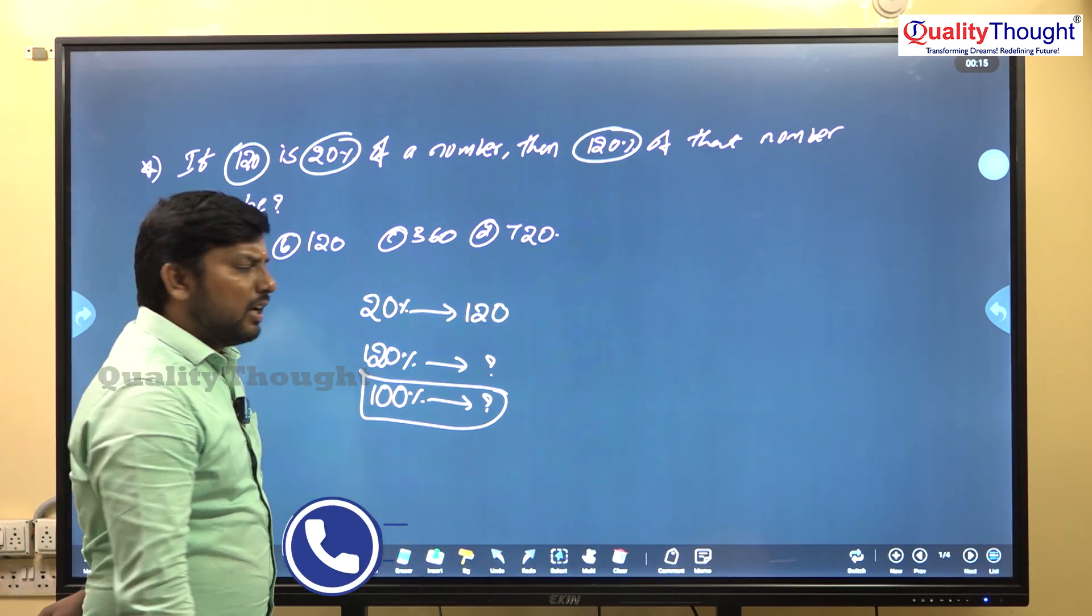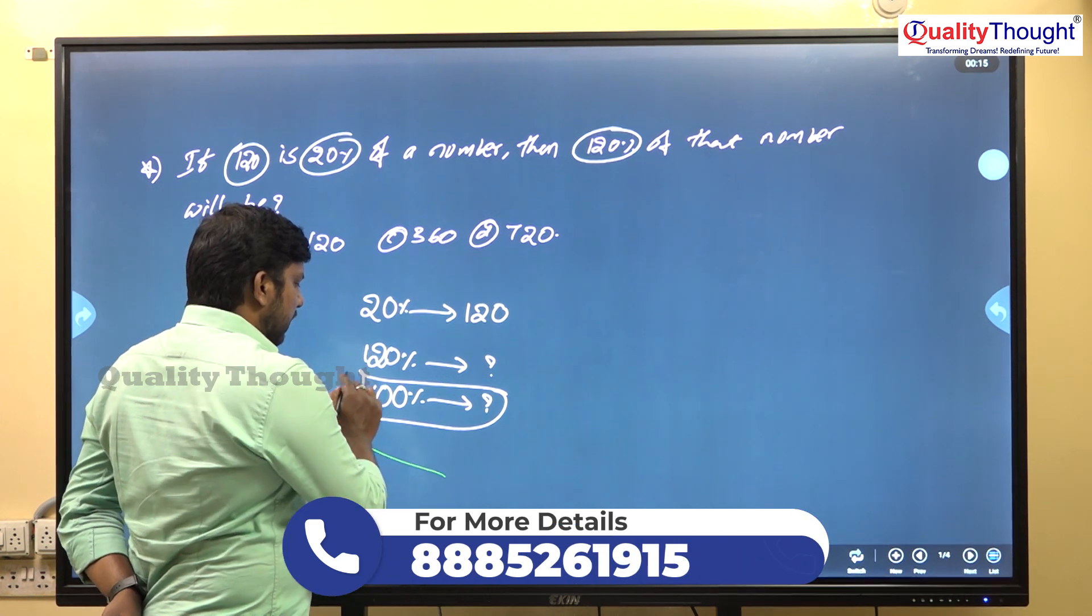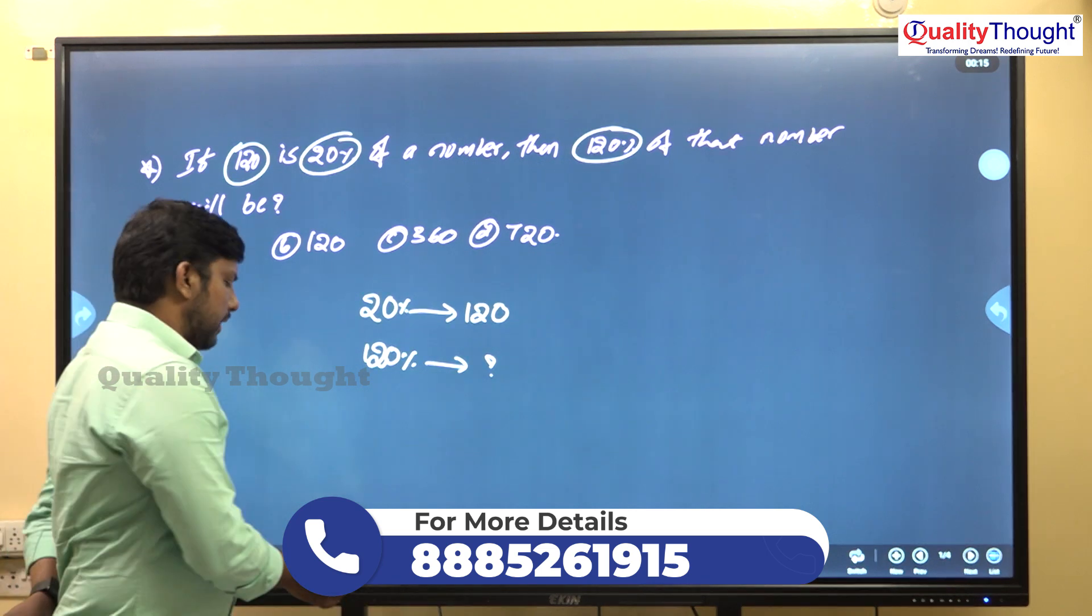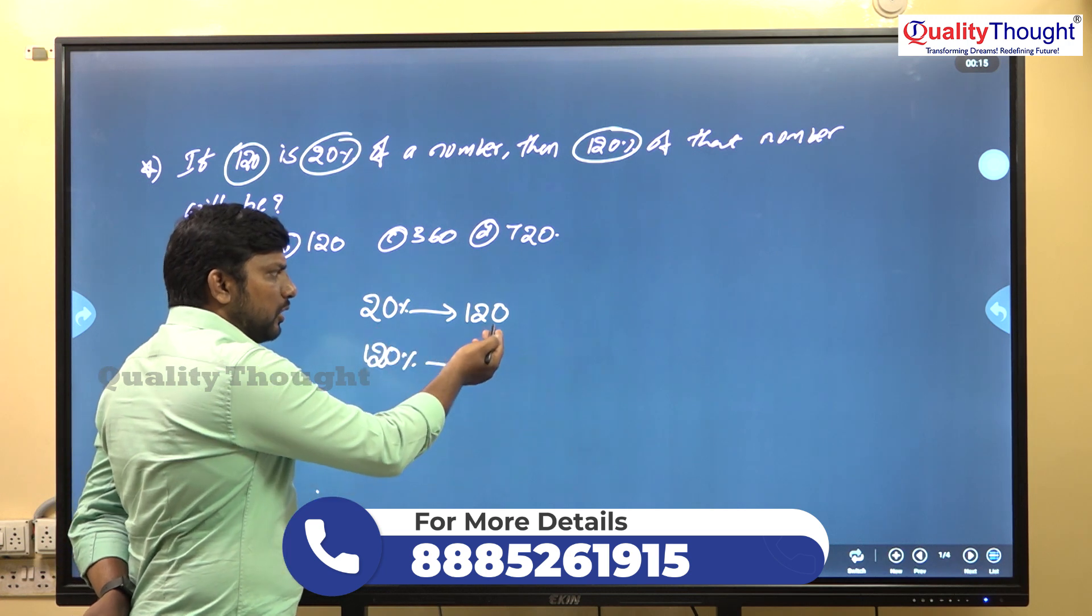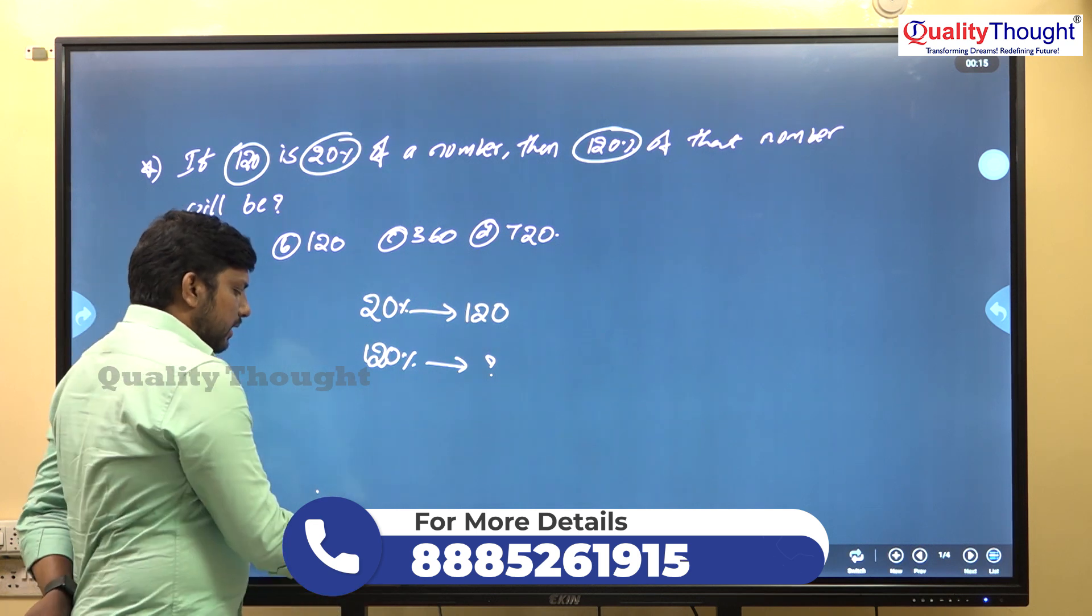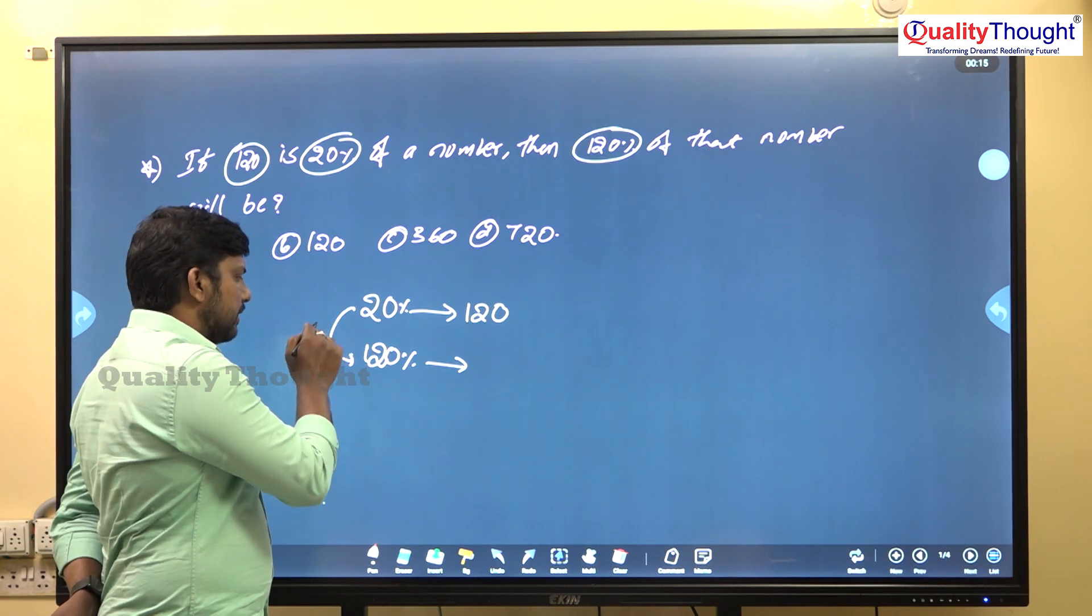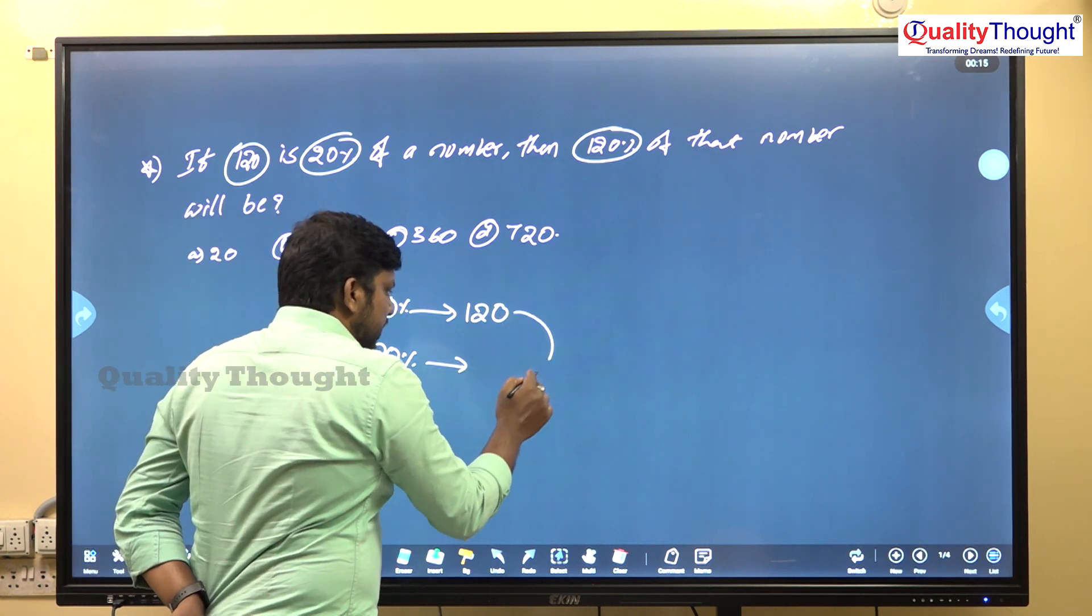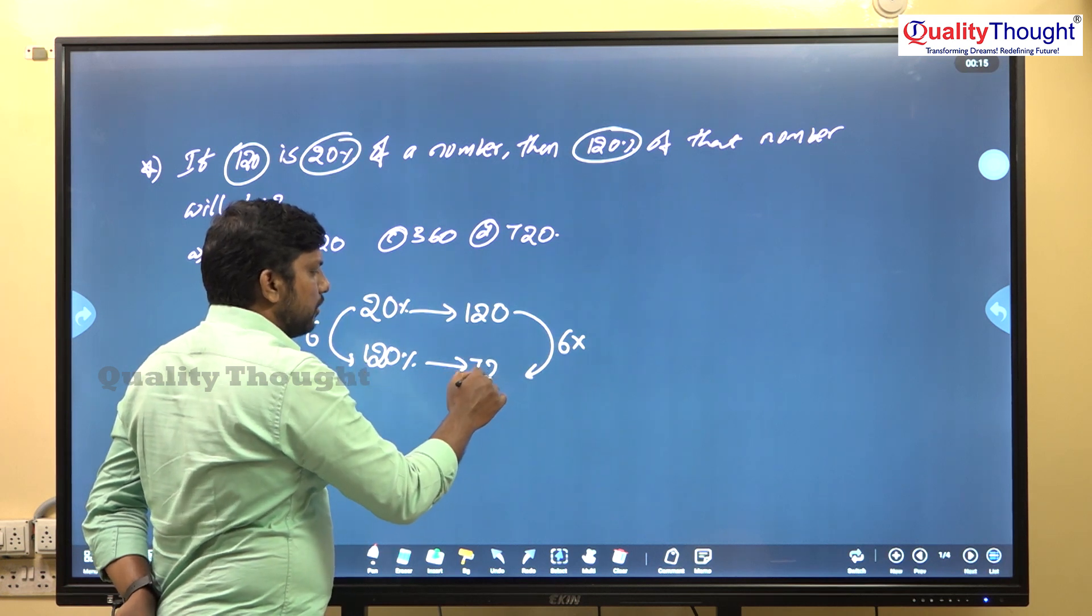But there's a shortcut - we can directly find 120 percent without finding 100 percent separately. Simple thing: 20 percent means 6 times increase. So 120 rupees times 6 gives us the answer, which is 720 rupees.